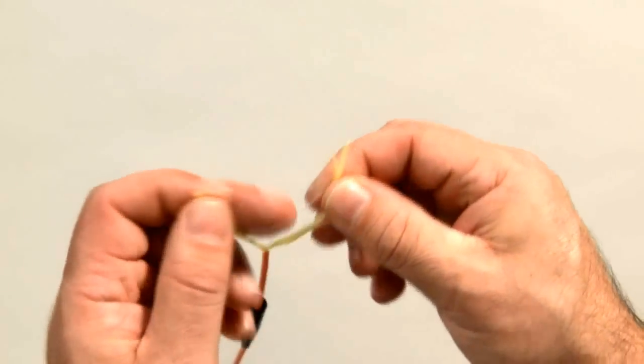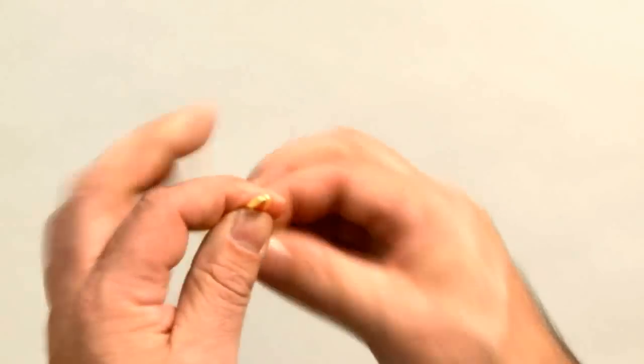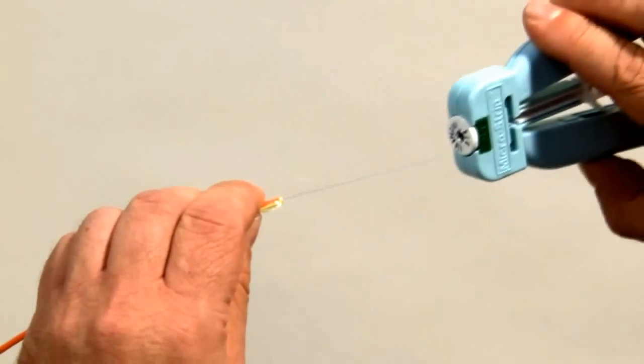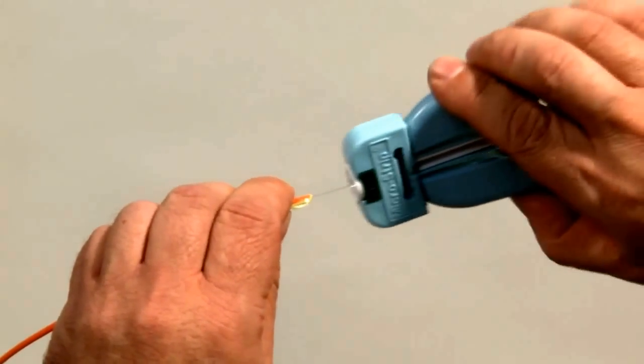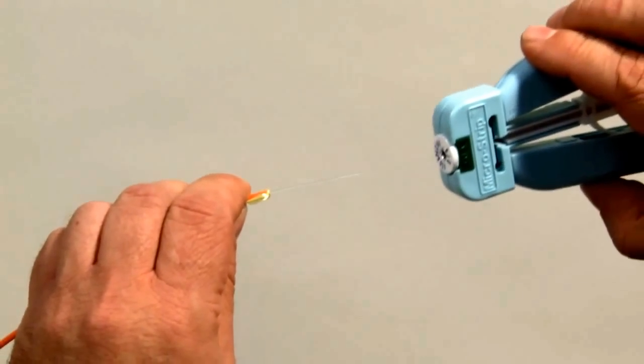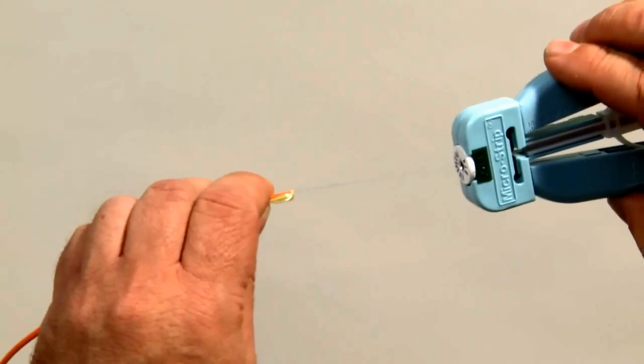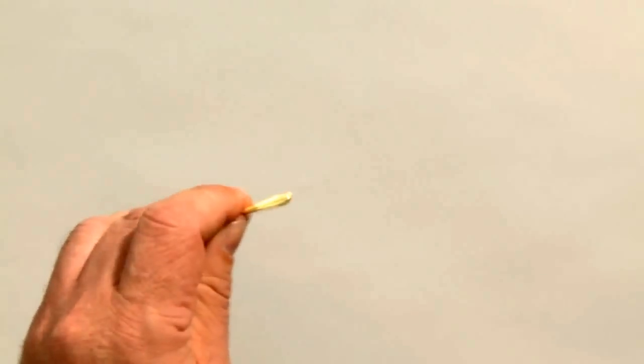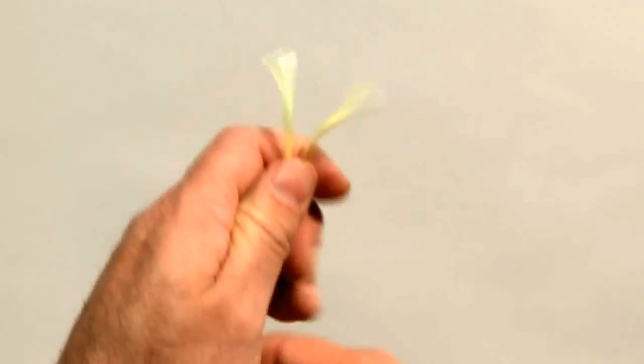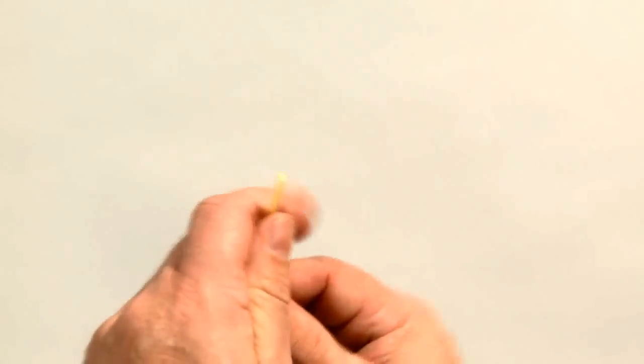Separate the aramid yarn from the fiber by pulling it back along the cable. Insert the buffered fiber into the fiber stripper. Squeeze the handles and pull straight to remove the buffer. Stripping the fiber in smaller sections helps keep the fiber from being pulled out of the jacket for shorter cable lengths. Pull the aramid yarn back over the fiber.